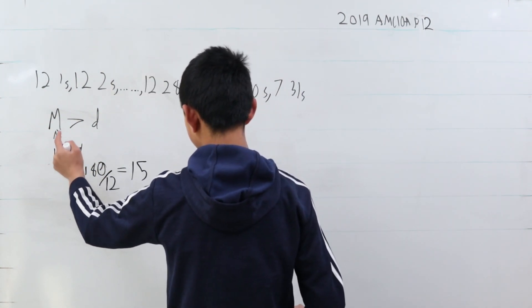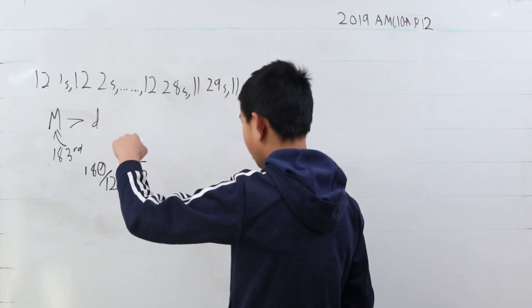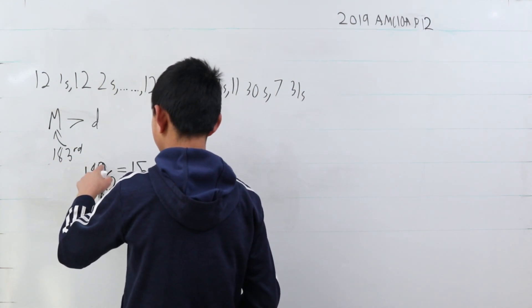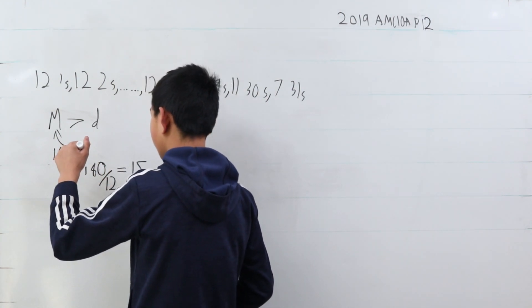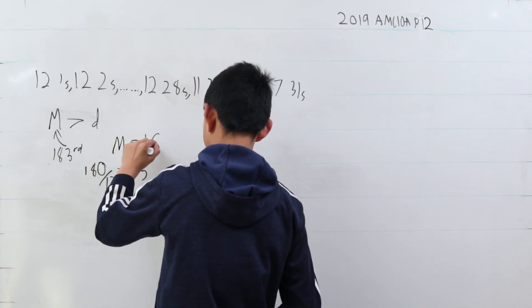we know that since this is three terms after, we know that m is equal to the third thing of 16, the third term of the 16 set. So we know that m is now equal to 16.